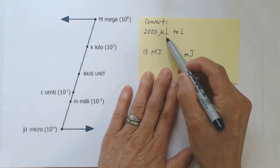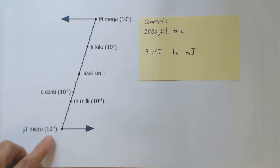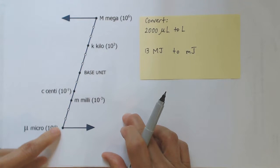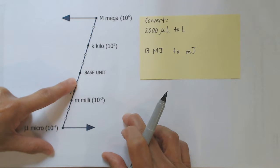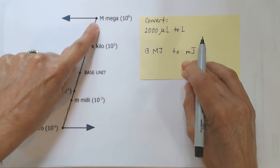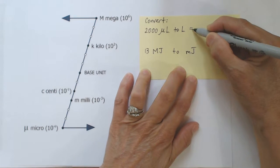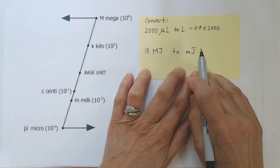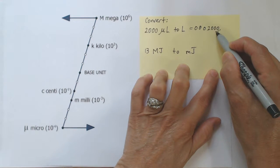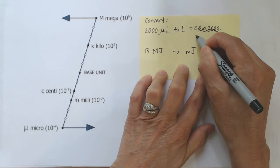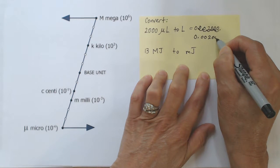Now let's convert 2,000 microliters to liters. Beginning at micro — 10 to the negative sixth power — we need to go up to liters: one, two, three, four, five, six places to the base unit. Going up means moving the decimal to the left. I'll write 2,000 and give myself working room zeros. The decimal point is currently here, and I go six places to the left. So 2,000 microliters equals 0.00200 liters.